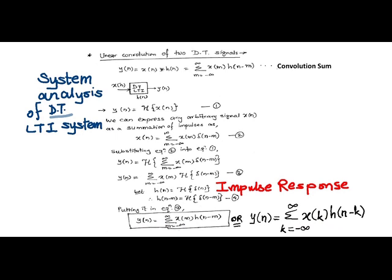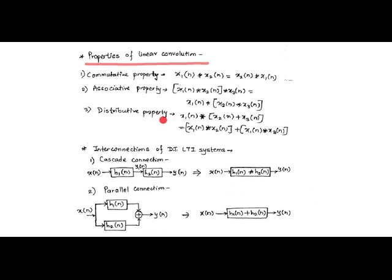There are three important properties of linear convolution: commutative property, associative property, and distributive property. In the commutative property, x1(n) convolved with x2(n) can equivalently be computed as x2(n) convolved with x1(n). In the associative property, x1(n) convolved with x2(n) followed by x3(n) can be equivalently calculated by changing the position of x1(n) and convolving with the convolution of x2(n) and x3(n). In the distributive property, x1(n) convolved with an additive mix of two signals can be expressed as the sum of x1(n) convolved with x2(n) plus x1(n) convolved with x3(n).